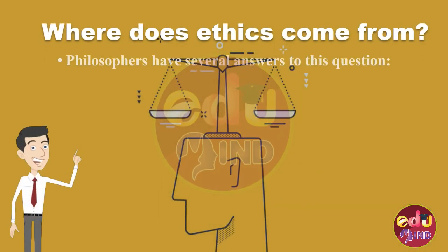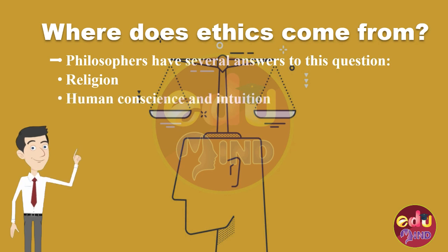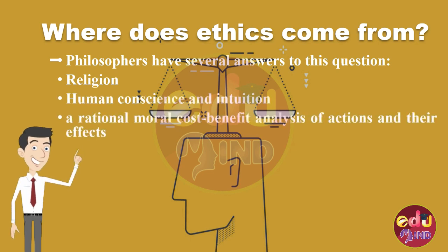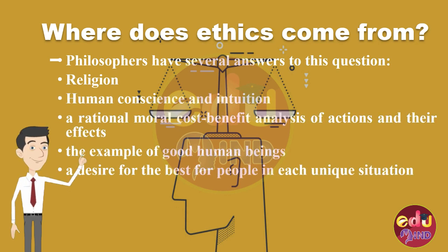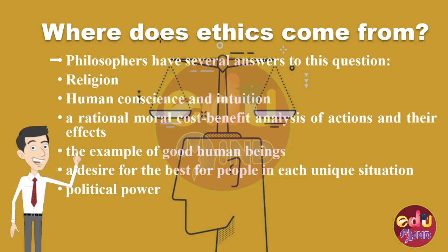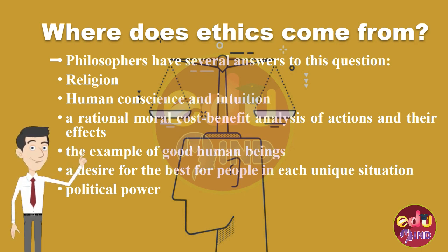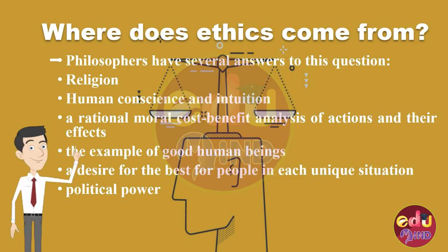So the question is: where does ethics come from? Ethics came from religion, human conscience and institutions, rational moral cost-benefit analysis of actions and their effects, the example of good human beings, a desire for the best for people in each unique situation, and political power.